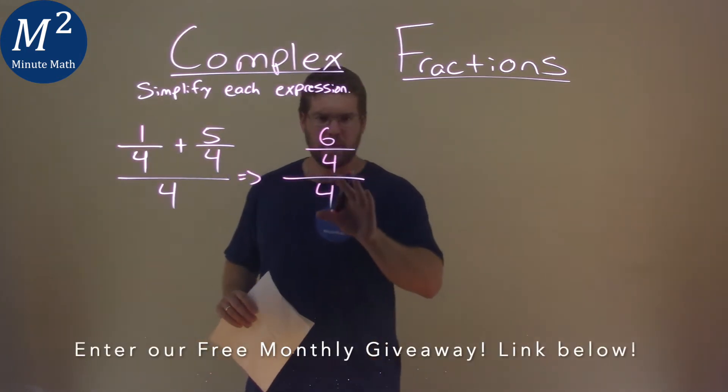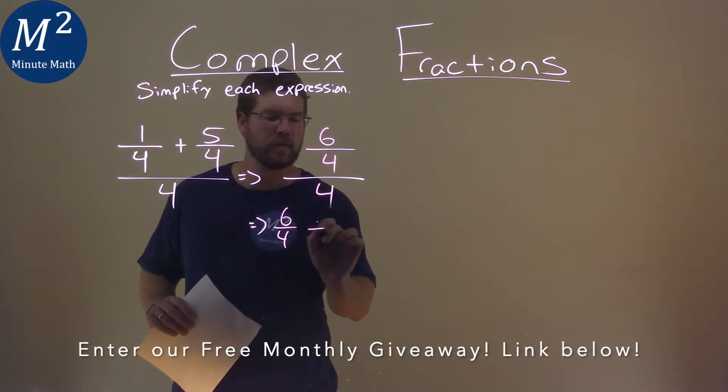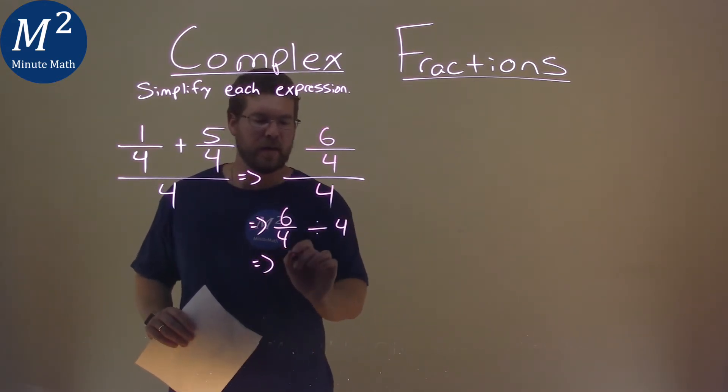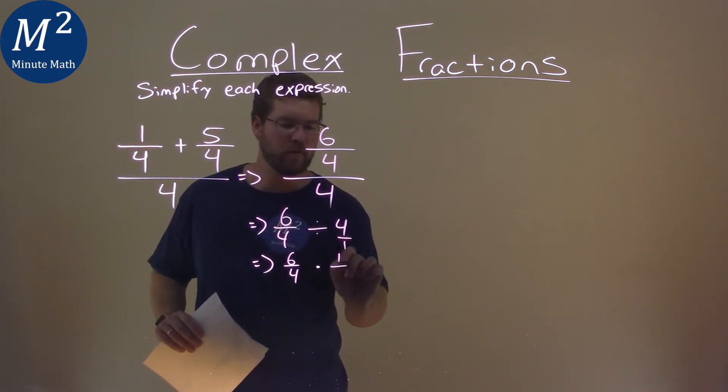Now, if you're like me, I like to rewrite this right here as 6 fourths divided by 4. It makes it a little easier to see, because then we have 6 fourths multiplied by—flip that fraction, right? 4 over 1 becomes 1 fourth.